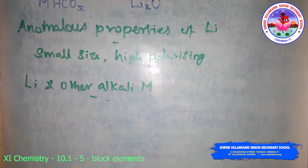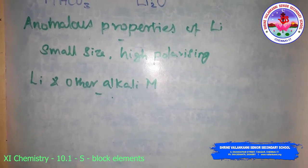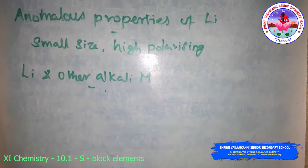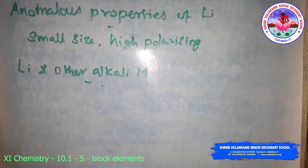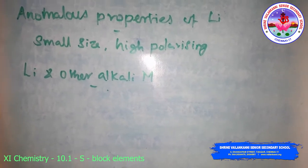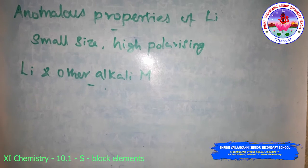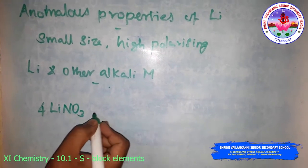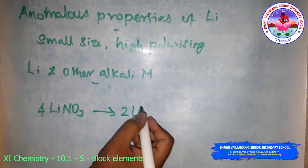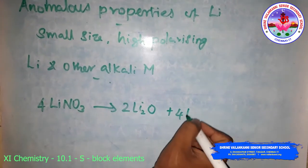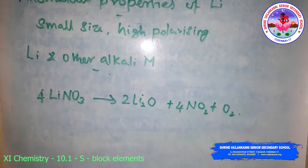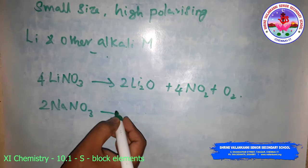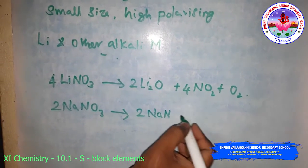Lithium hydrogen carbonate is not obtained in solid form, while all other alkali metals give solid hydrogen carbonates. Lithium, unlike other alkali metals, forms no acetylide on reaction with ethyne. Lithium nitrate when heated gives lithium oxide, whereas other alkali metal nitrates decompose to give the corresponding nitrite.